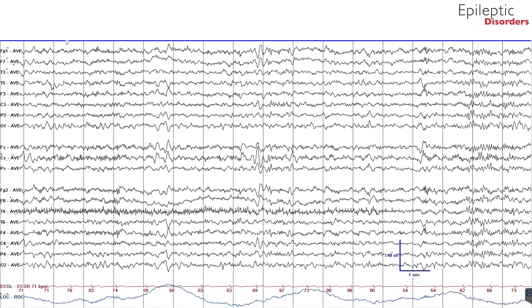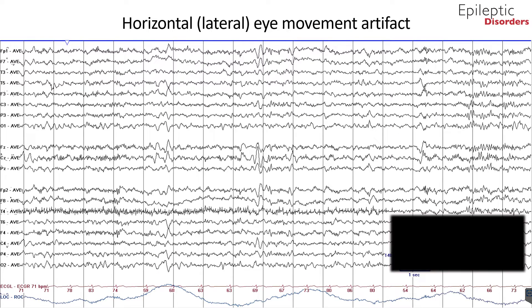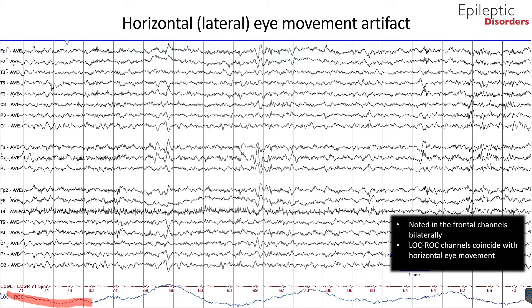Again, shown in the average montage, and most notably in the lateral frontal chains F7 and F8, the lateral eye movements can also be seen in the LOC/ROC eye lead channels below, where the slow undulating waveforms represent eye movements.